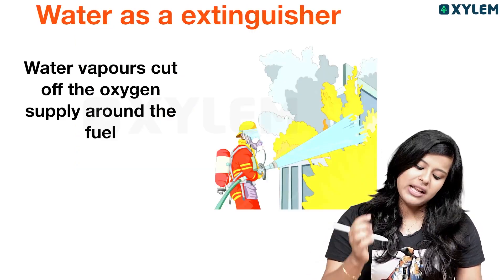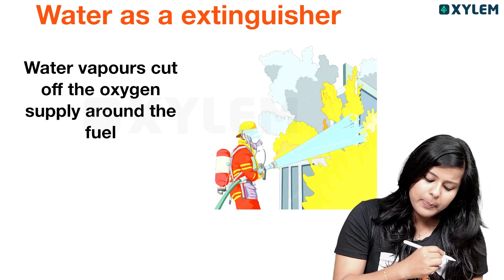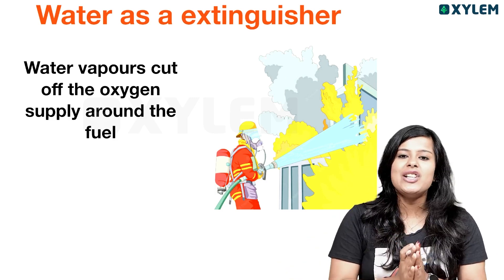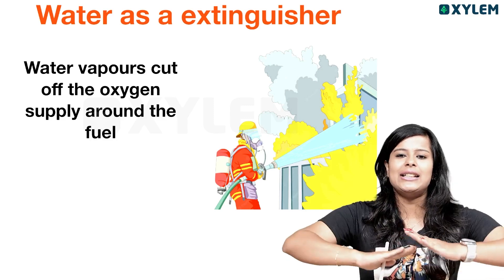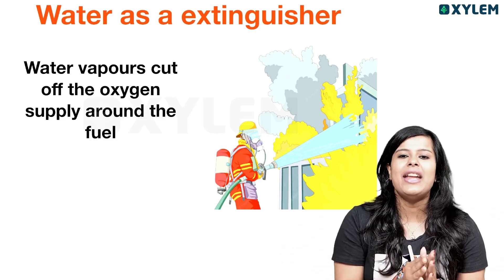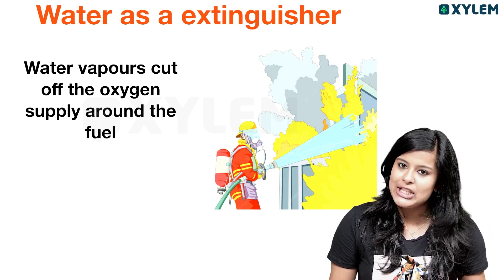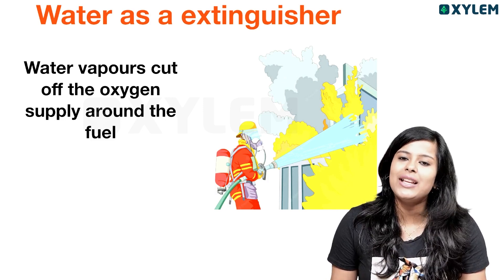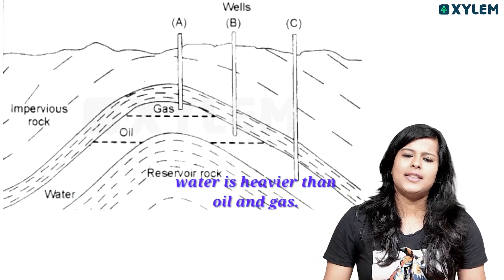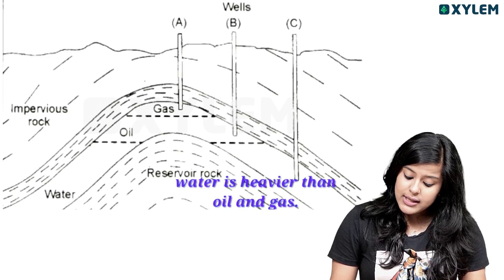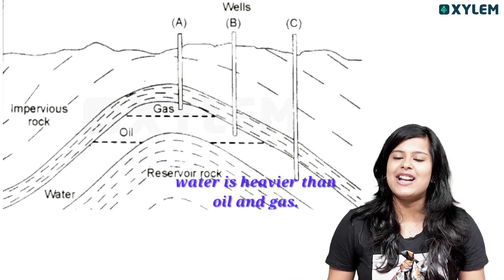There are two points about how water works as an extinguisher. First, water brings down temperature below ignition temperature. Second, water vapors cut off the oxygen supply around the fuel. Oxygen is very, very important for burning a substance. Water is heavier than oil and gas, so it cannot be used on oil fires.